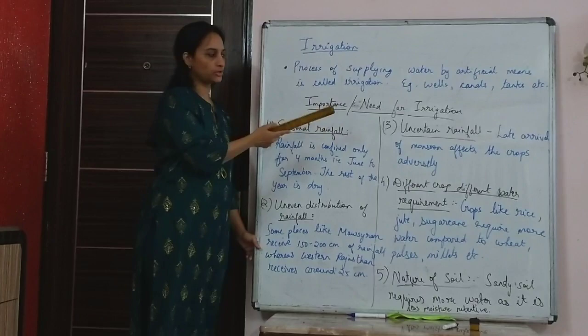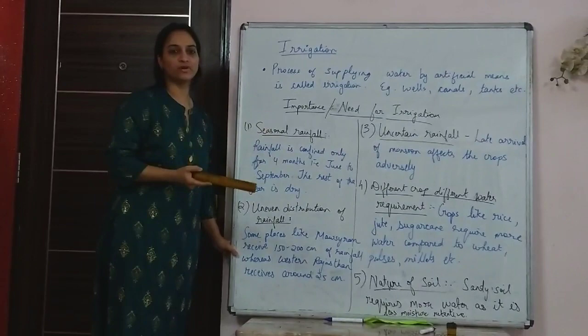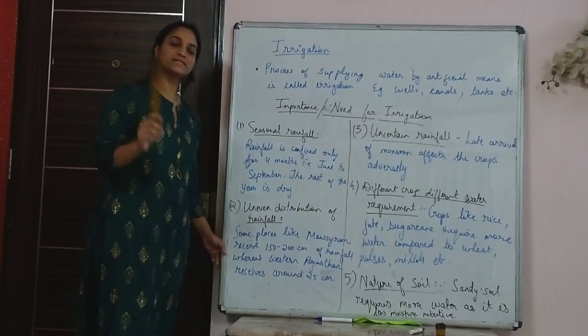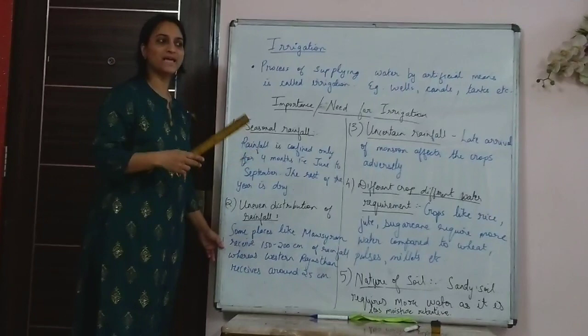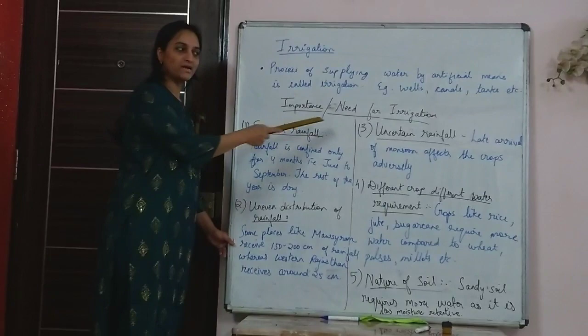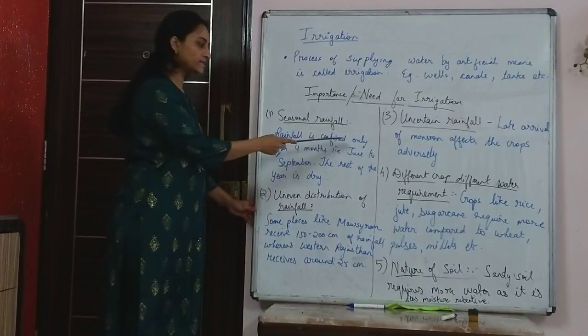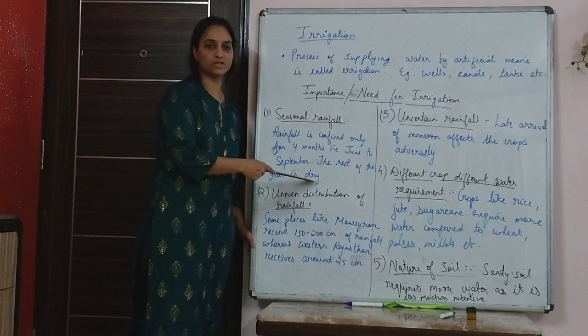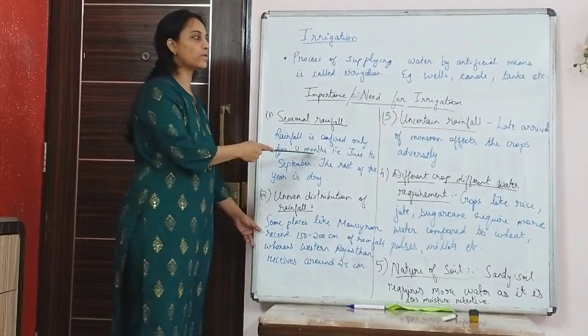Why is irrigation important? Rainfall is received only for 4 months, and even during those 4 months there are dry spells when it doesn't rain every day. So irrigation is required. Seasonal rainfall is confined from June to September; the rest of the year is dry, but agriculture is carried out year-round, so water must be supplied through irrigation. Uneven distribution of rainfall also means some places like Mawsynram and Cherrapunji receive heavy rainfall, while places like western Rajasthan receive only 25 centimetres.